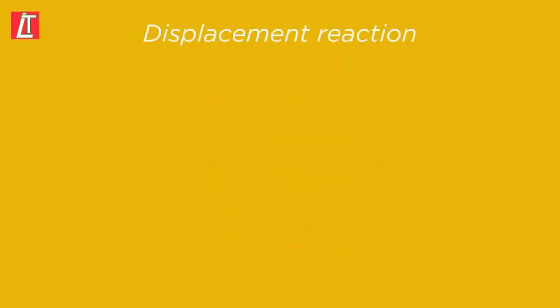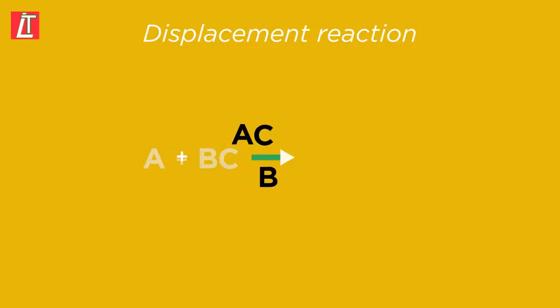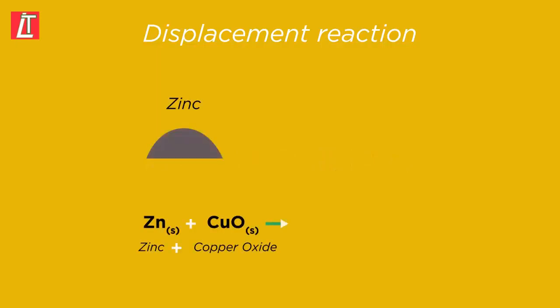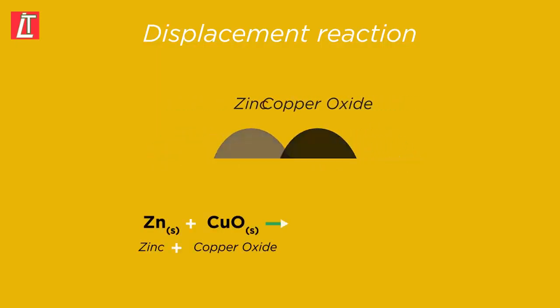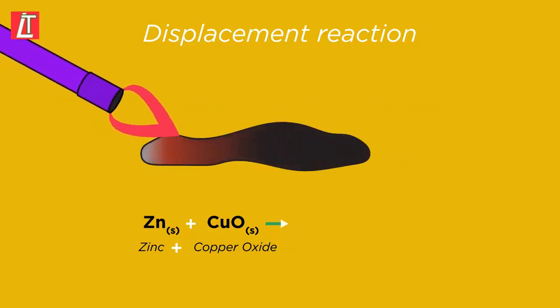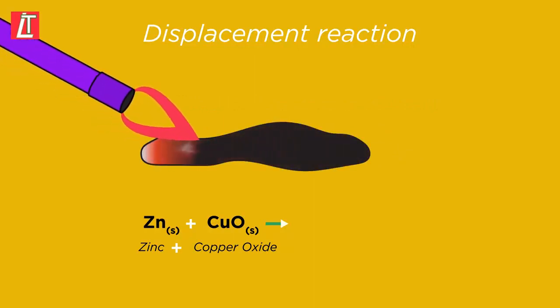A displacement reaction is simply when one element pushes out or displaces another from a chemical compound. For example, if a mixture of grey zinc powder and black copper oxide powder are mixed and then heated strongly, causing the reaction to start,